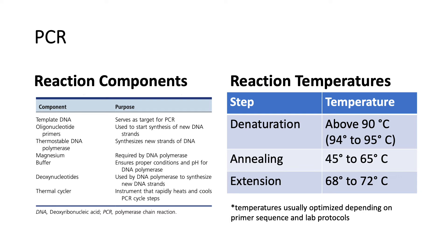We also have our thermal cycler, the instrument that rapidly heats and cools the PCR cycle steps. The three cycle steps occur at varying temperatures. Denaturation occurs at temperatures above 90°C, usually 94–95°C. The annealing temperature can range from 45°C to 65°C and is optimized based on the primer sequence and lab protocols. Finally, the extension step occurs from 68°C to 72°C.